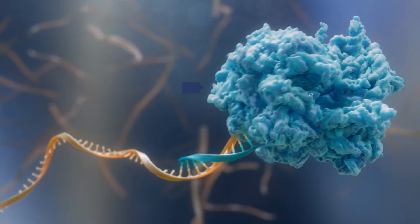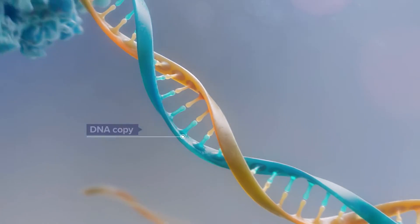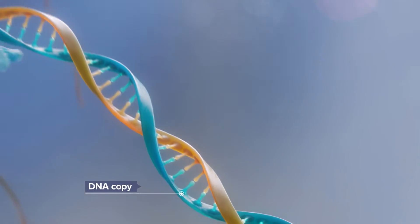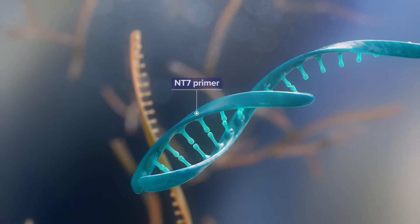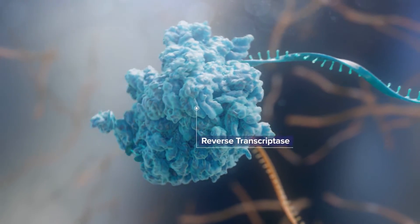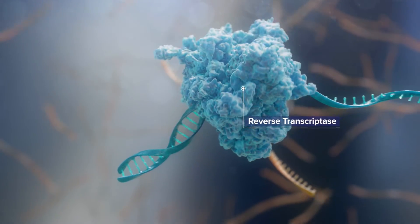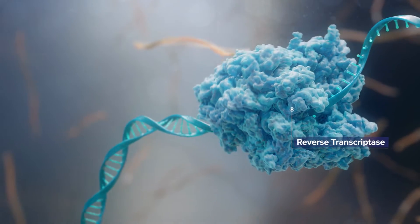In the amplification phase, reverse transcriptase extends the T7 promoter primer to synthesize a DNA copy of the target nucleic acid. The original strand is degraded, which allows a sequence-specific NT7 primer to hybridize to the nascent DNA strand, enabling the transcriptase-mediated creation of double-stranded DNA.